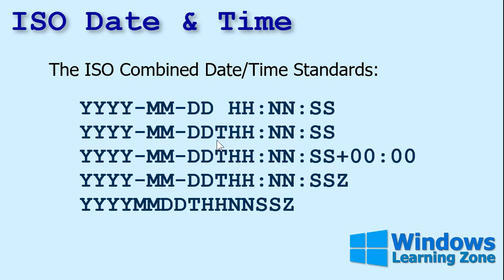Or you might see it with a T there — sometimes they separate the date and time portions with a T. This one adds a time zone — Greenwich Mean Time, meaning zero hours plus or minus.